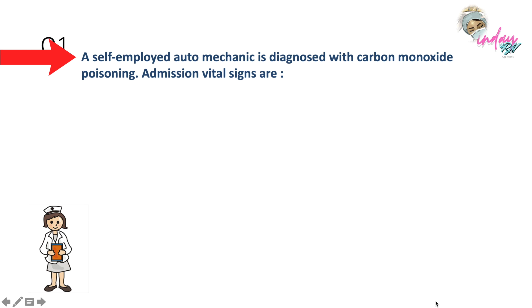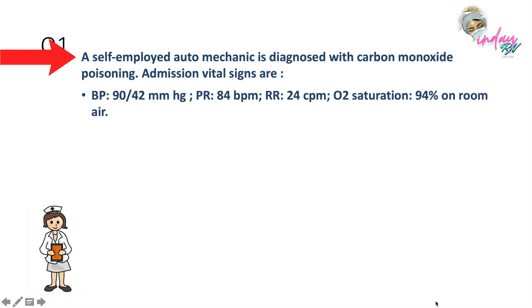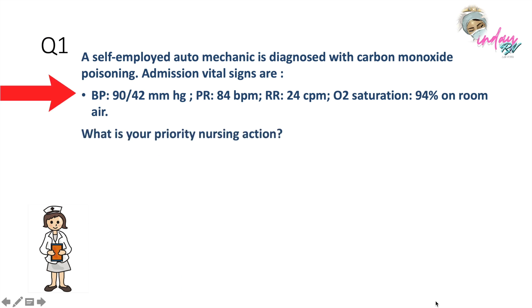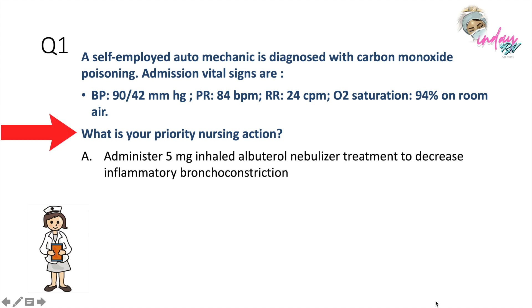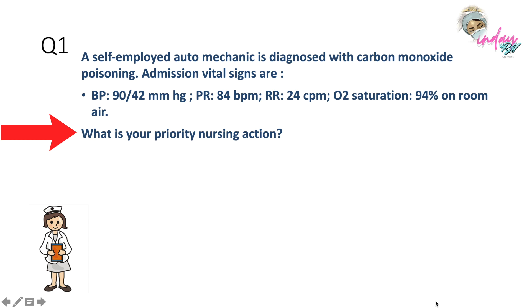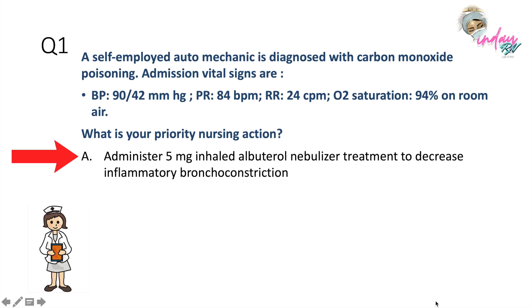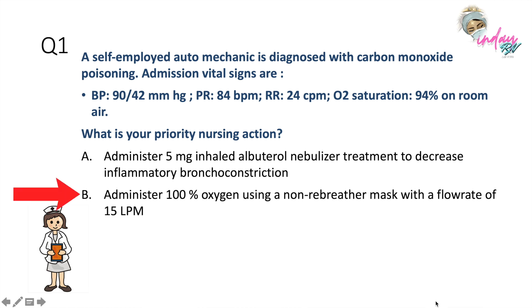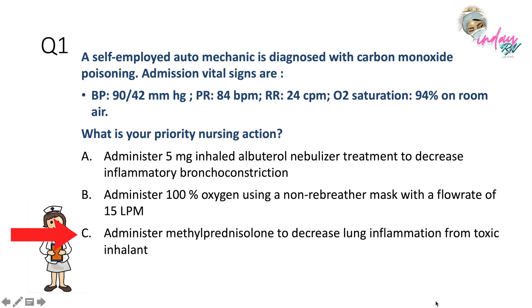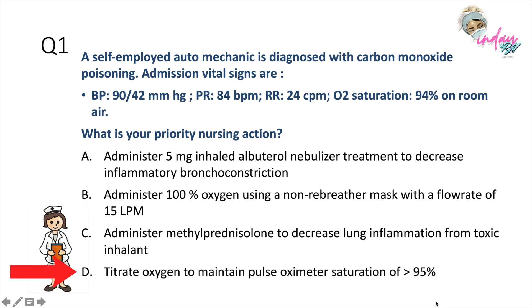First question: A self-employed auto mechanic is diagnosed with carbon monoxide poisoning. Admission vital signs are BP 90/42, PR 84, RR 24, O2 saturation 94% on room air. What is your priority nursing action? Options: A) Administer 5mg inhaled albuterol nebulizer treatment to decrease inflammatory bronchoconstriction. B) Administer 100% oxygen using a non-rebreather mask with a flow rate of 15 LPM. C) Administer methylprednisolone to decrease lung inflammation from toxic inhalant. D) Titrate oxygen to maintain pulse oximeter saturation greater than 95%.